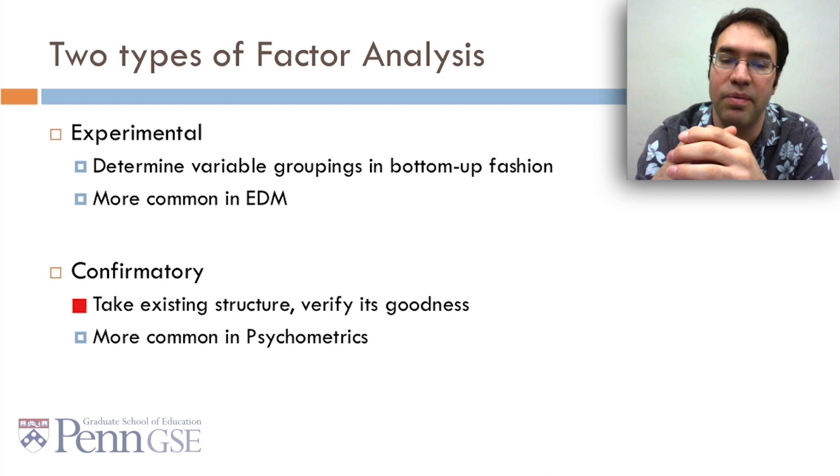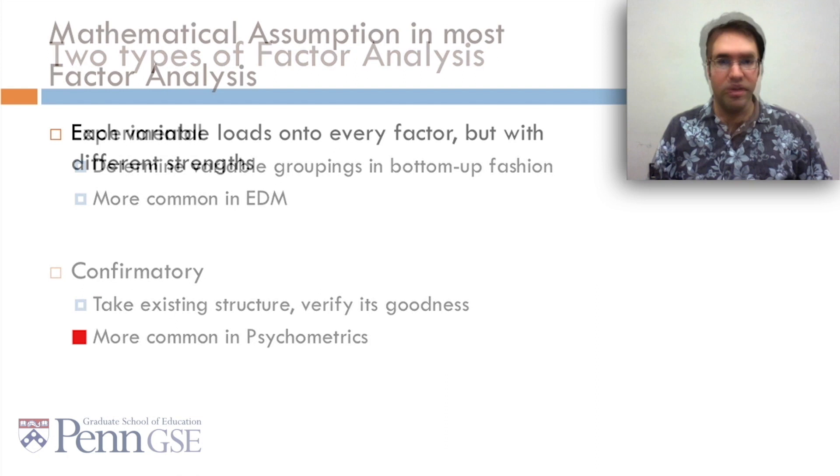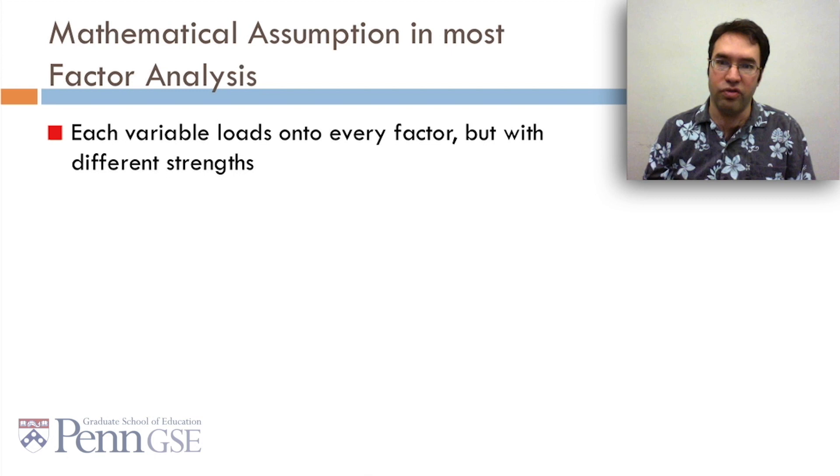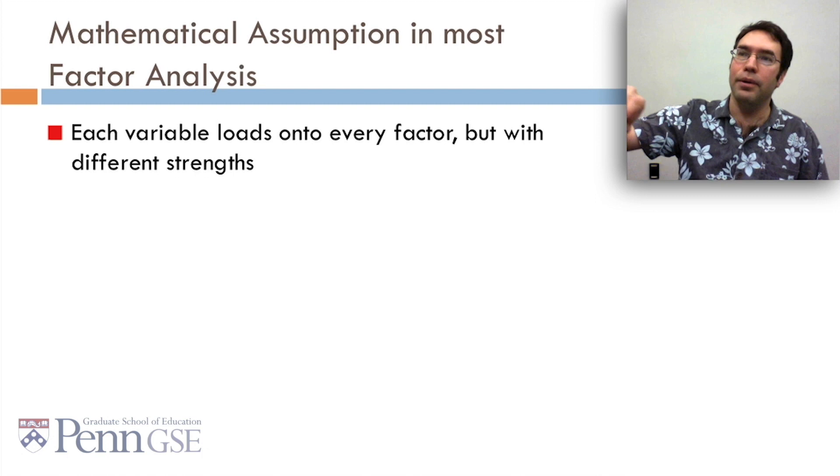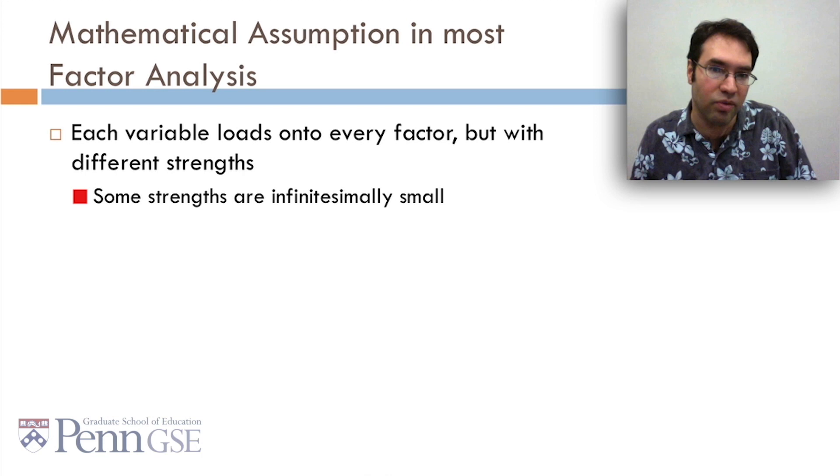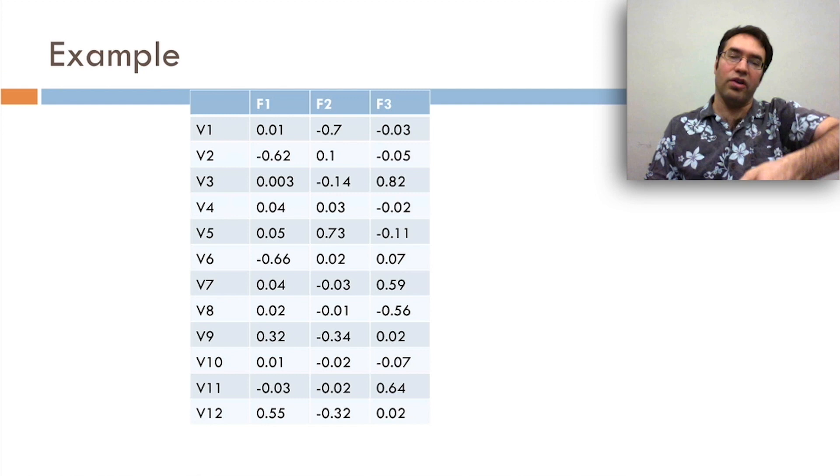Regardless of whether you're doing exploratory or confirmatory factor analysis, the mathematical assumption you'll usually see is that each variable loads onto every factor, but with different strengths. So, in other words, it's not actually that there are these seven variables that are in this factor, as much as that every variable is, but only seven actually load strongly on it. Only seven participate substantially in its calculation. Some strengths can even be infinitesimally small. So let's look at an example. Let's say that you've run factor analysis, and you have your twelve variables, and you have your three factors, and here's how much each one loads. Here's how much each variable loads on each factor.